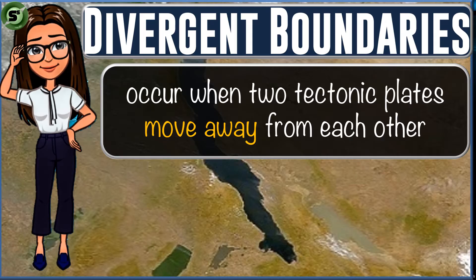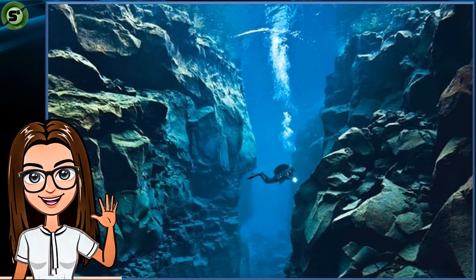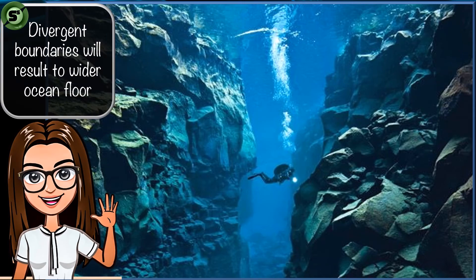Along divergent boundaries, earthquakes are common, and magma — the molten rock — rises from the earth's mantle to the earth's surface. The molten material, or lava, solidifies to create new oceanic crust. Aside from frequent earthquakes, divergent boundaries result in wider bodies of water like oceans, as new ocean crust deposits turn the ocean floor wider.